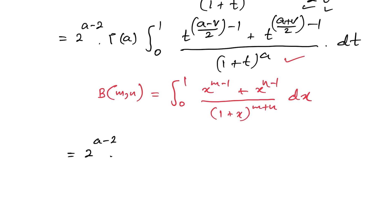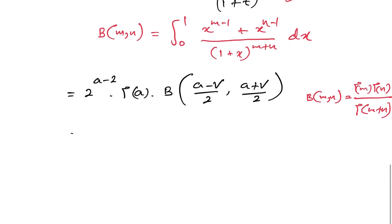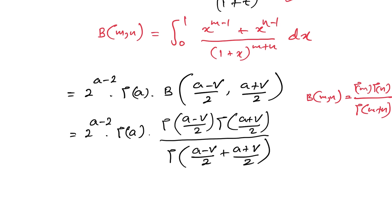This gives us 2^(a-2) · Γ(a) times β((a-v)/2, (a+v)/2). Using the relation between the Beta and Gamma functions, β(m, n) = Γ(m)·Γ(n) / Γ(m+n), and noting that (a-v)/2 + (a+v)/2 = a, the denominator becomes Γ(a).